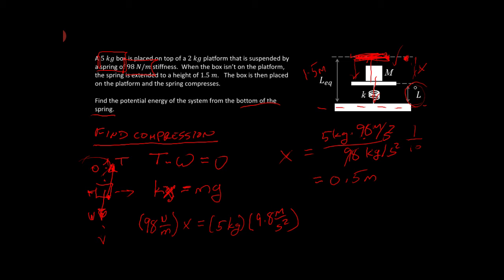So if that's our compression, what's this length? Well, the current length of the spring is equal to the original length of the spring minus the compression. The original length of the spring up, the compression down, gives us the length. So that's going to be L is equal to 1.5 meters minus 0.5 meters, which is equal to 1 meter. Okay, so we're going to need both the x and the L in computing the potential energy.